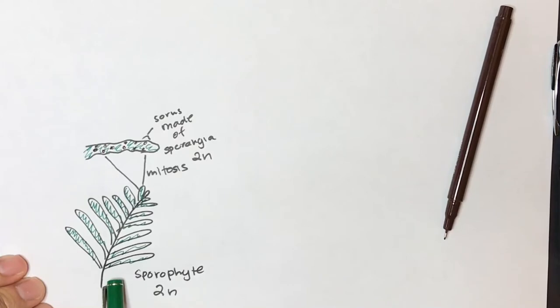The gametophyte for a fern is also green, but that's not the part that we see in our yard. The part that you see outside in the shade somewhere nice, that's the sporophyte. It's 2N tissue.